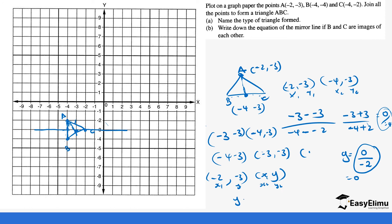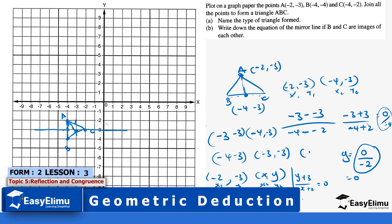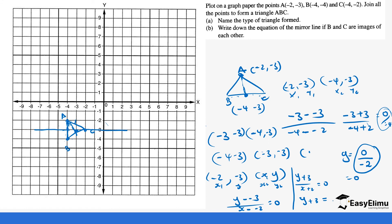Using point (−2, −3) and an unknown point (x, y), the gradient equation gives us: (y minus −3) over (x minus −2) equals 0. So y plus 3 over x plus 2 equals 0, which means y plus 3 equals 0, giving us y equals −3. So the equation of the perpendicular bisector line is y equals −3.